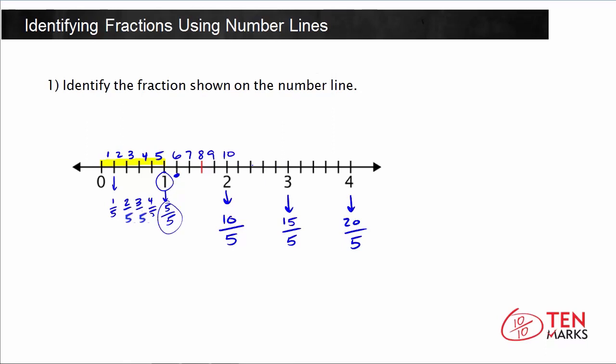Now look at the fraction marked on the number line and count the fifths to get the fraction. The number 8 falls directly above the red tick mark, meaning it's the 8th equal part. So the red mark on this number line represents the fraction 8 fifths, because we counted all the way up to 8 and each whole has 5 parts.